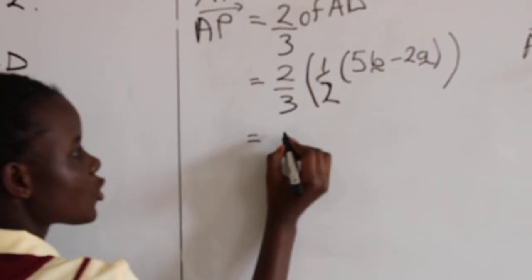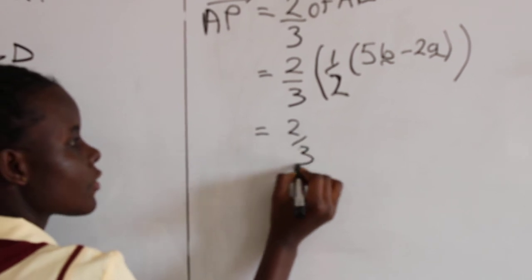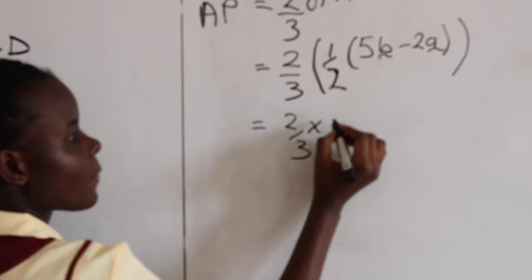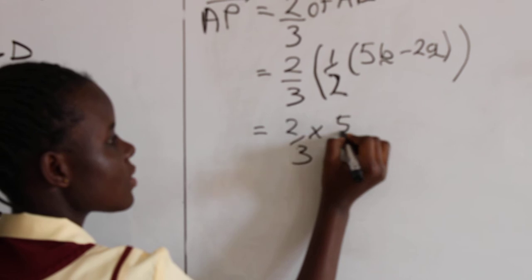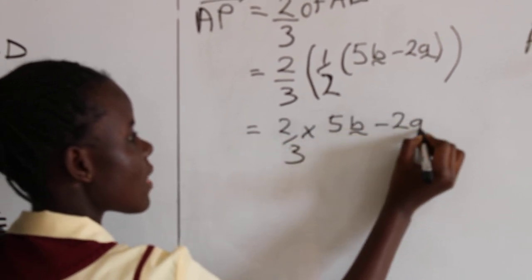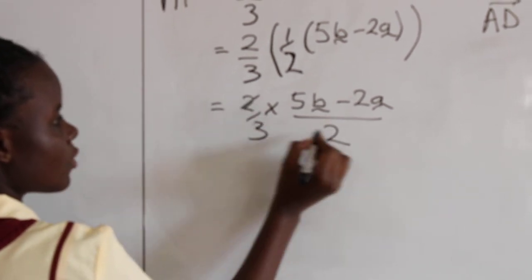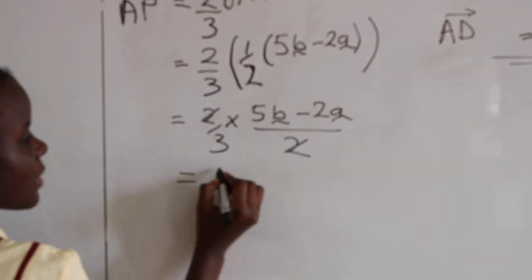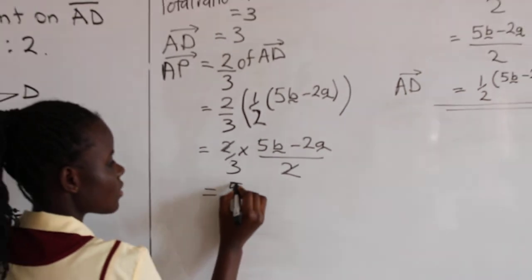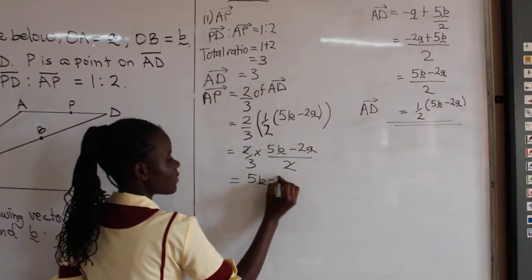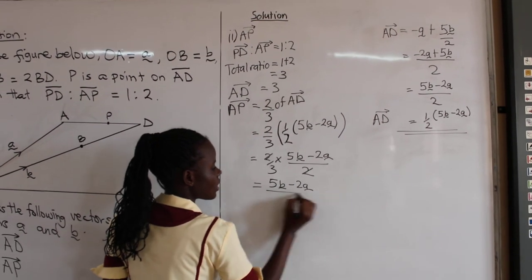So it will be 2 out of 3 times 5B minus 2A out of 2. These 2 will go with this one and shall mean 5B minus 2A out of 3.